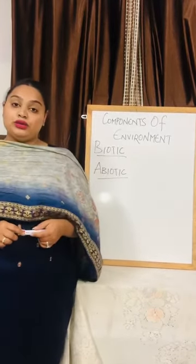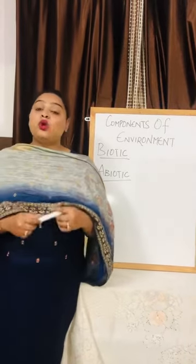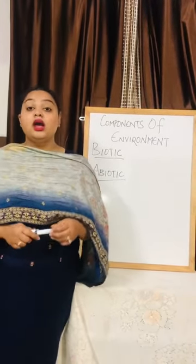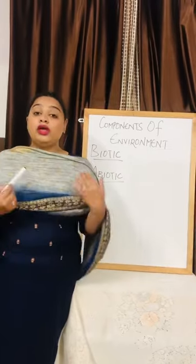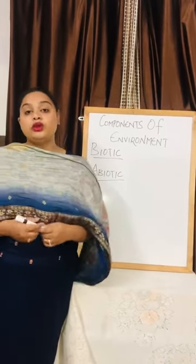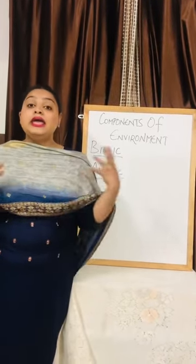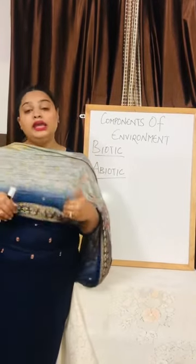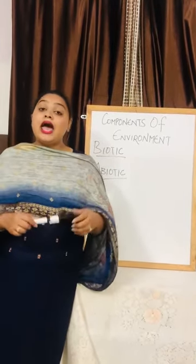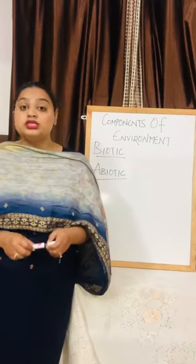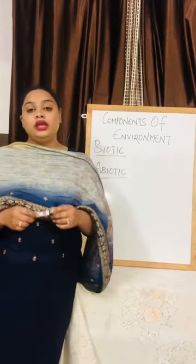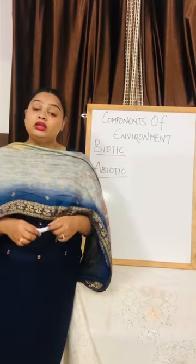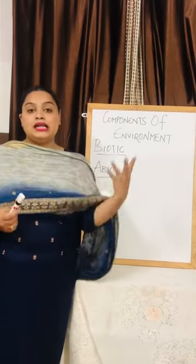The second abiotic component is water. Water is also an essential component. When we feel thirsty, we drink water. It will help to balance the heat in our body. And animals and birds also need water.